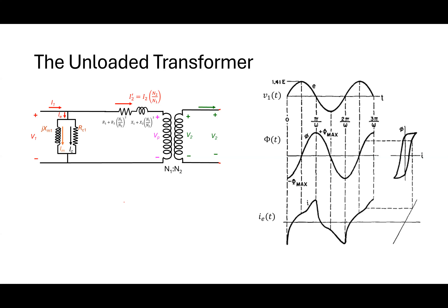Typically when the transformer is unloaded — meaning I put a voltage source on the primary with nothing on the secondary — I get a flux and a current. I keep calling this I-sub-e; the 'e' means exciting current. It's the current required to excite the transformer — to make the magnetic field happen inside. If the transformer were ideal there would be no current required, but because it's real I have to magnetize the core, and some current goes into that process.